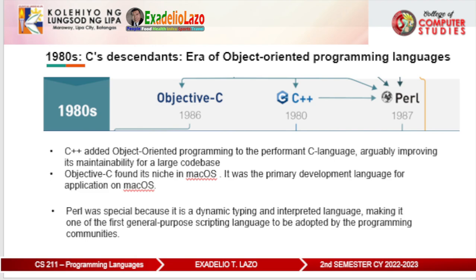C++ added object-oriented programming to the performant C language, arguably improving its maintainability for large codebases. It went on to become a solid candidate for system programming and applications with critical performance requirements. It is also one of the few programming languages that essentially supports all different paradigms of programming — be it procedural, functional, object-oriented, and generic programming. As of the time of writing, C++23 is the next upcoming standard.